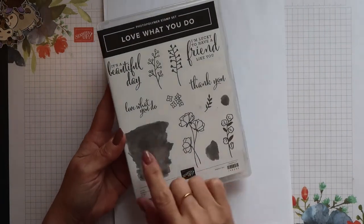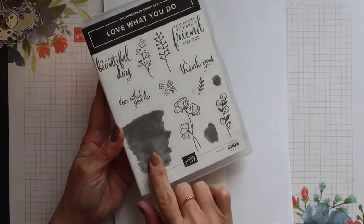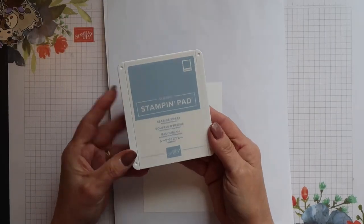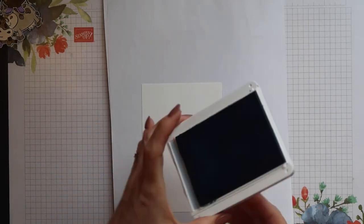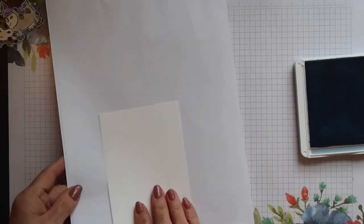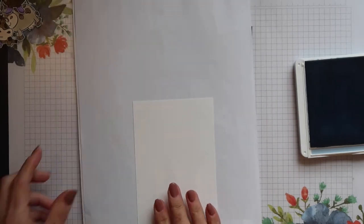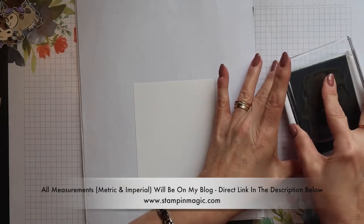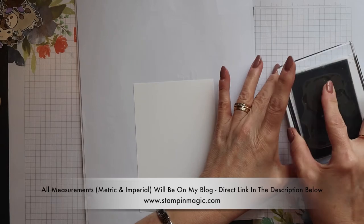I'm going to stamp my background layer next and I'm using the large stamp from the Love What You Do stamp set. I'm going to stamp this in one of our new ink colors, Seaside Spray. Now I'm stamping on a foam mat because the stamp itself is photopolymer so there's no cushion of sponge underneath the stamp itself.